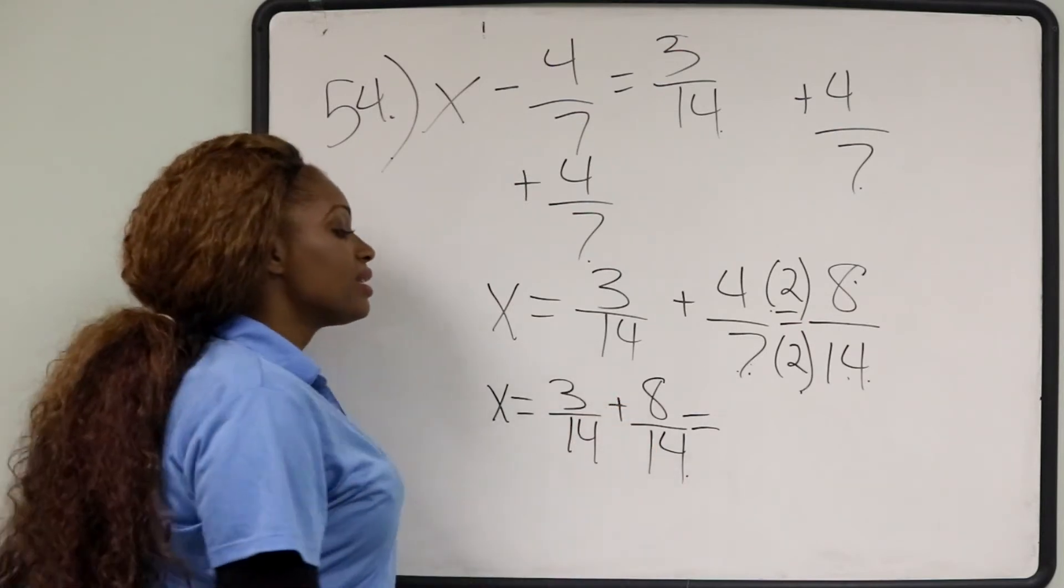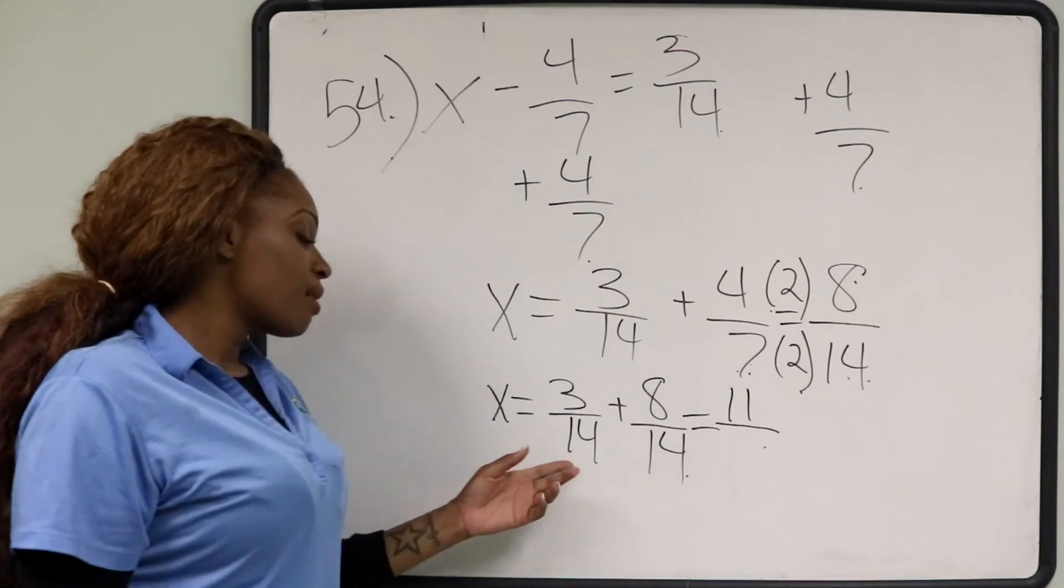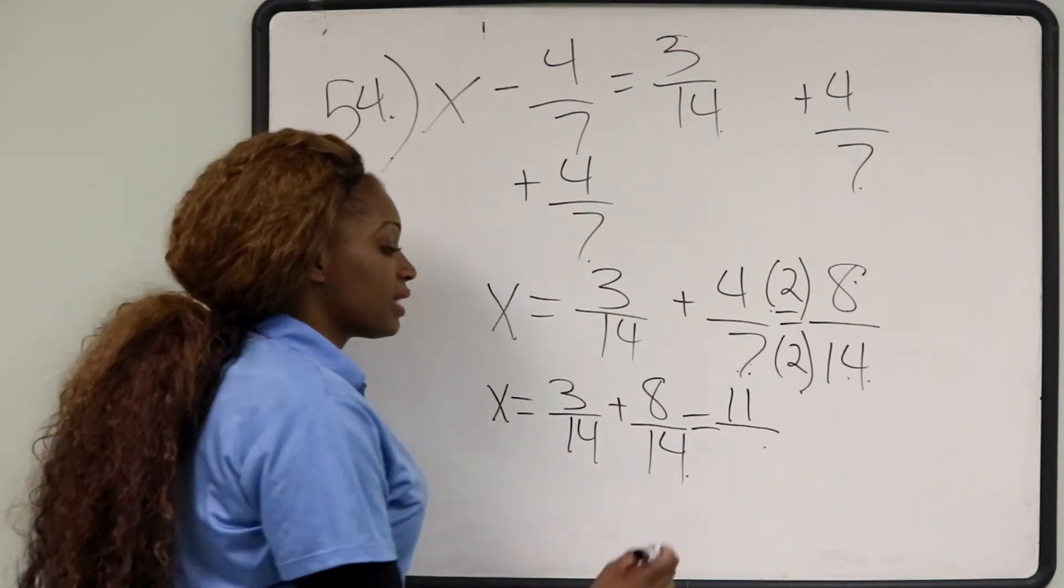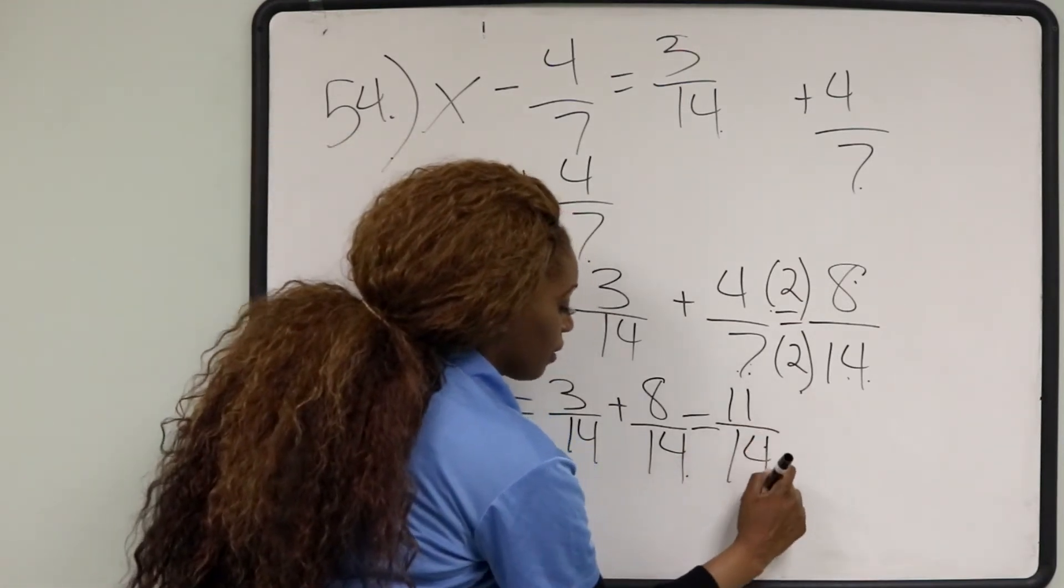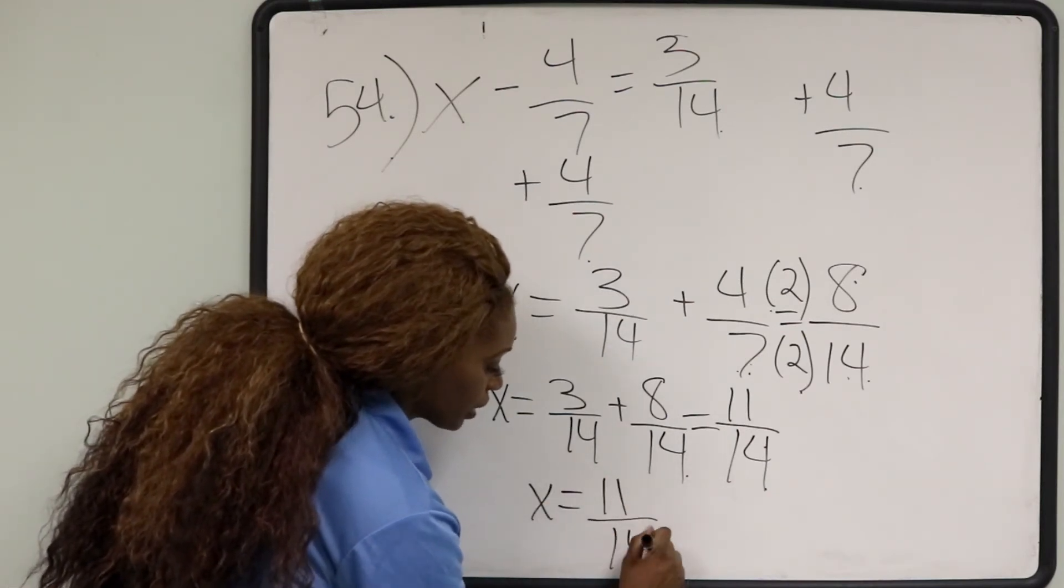3 plus 8 is 11 in the numerator. Our denominator, when you're adding, is going to stay the same. It's going to be 14. Our final answer is x equals 11 over 14.